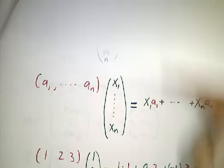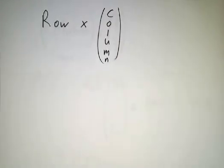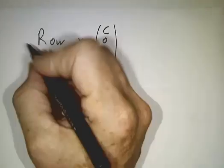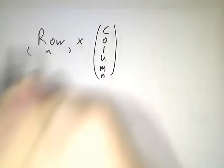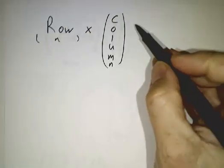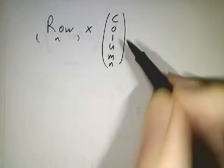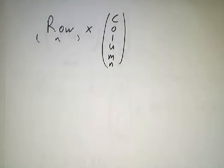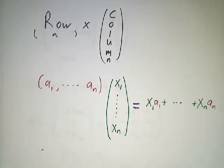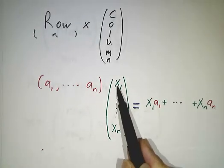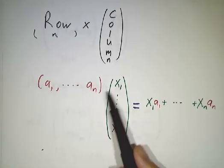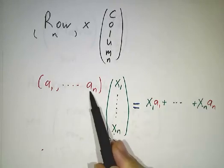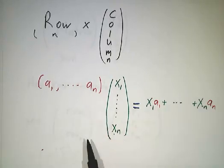Let's start with the simplest case. We have just a row, and we're gonna assume that the width of the row is n, and a column, where the height of the column is also n. We're gonna say, what's the product of a row with a column? The product of a row with a column is you just take the first element of the column times the first element of the row, plus the last element of the column times the last element of the row. It's just like the dot product.